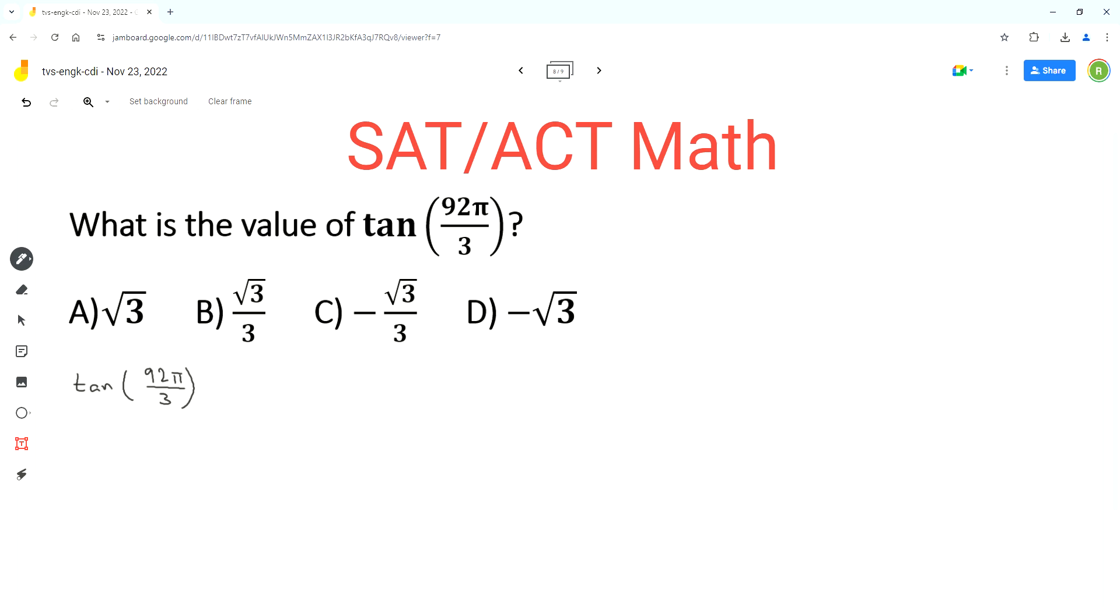92π over 3 is an angle in radians and this angle value is greater than 2π. This angle is not on unit circle, so we have to simplify this angle expression.